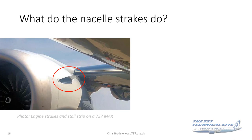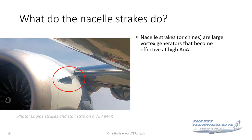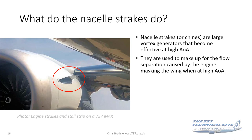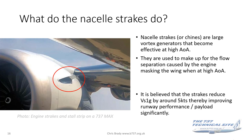There are other aerodynamic features on the NG and the MAX — the engine strakes, or chines as they're sometimes called. They're very large vortex generators that become effective at a high angle of attack, used to make up for flow separation caused by the engine masking the wing at high angle of attack. It's believed these strakes reduce the stall speed by around five knots, improving runway payload performance. But the bottom line is that strakes have no effect on the non-linear stick force gradient.